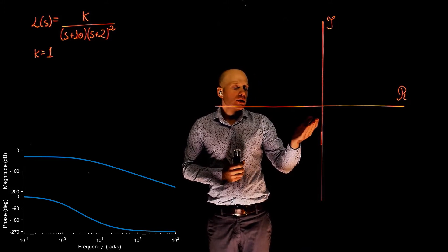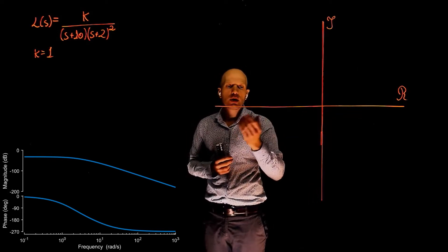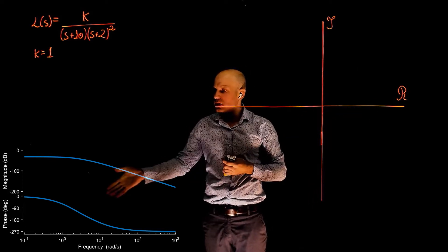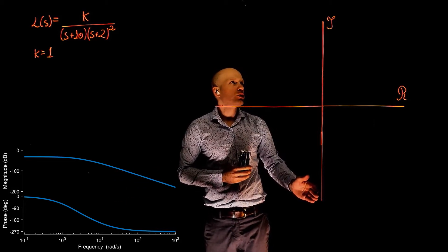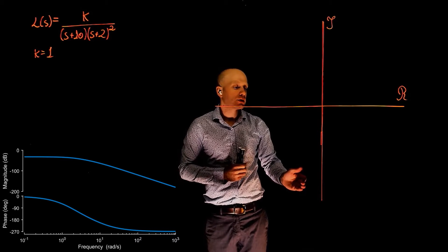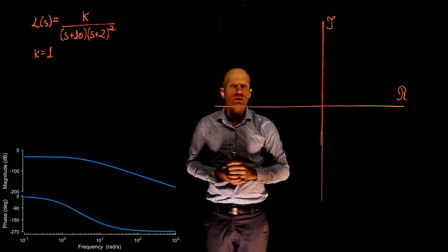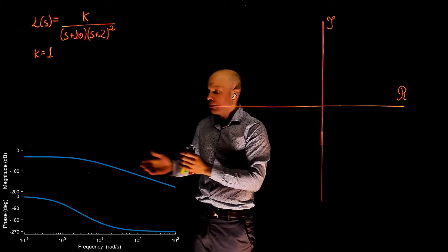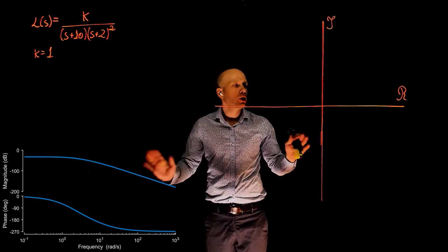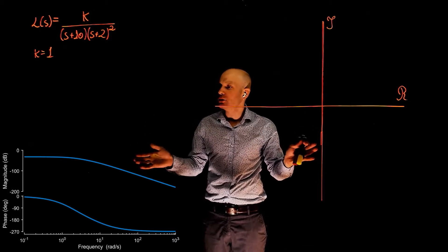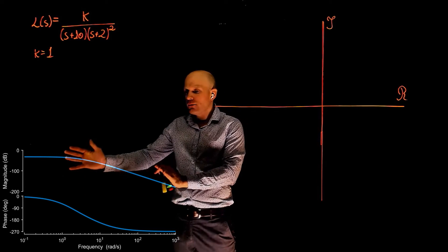We can clearly see that at the points where we cross the real axis, the phase of those points is zero and 180 degrees, which can be seen in the Bode plot as well. We can also see that at the points where we cross the imaginary axis, the phase is 90 degrees and negative 90 degrees, which is also shown in the Bode plot. In fact, the Nyquist plot and the Bode plot show the exact same information, but in the Nyquist plot we remove the information about frequency.